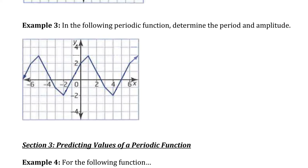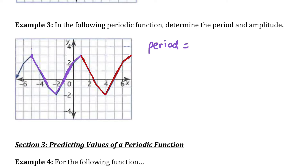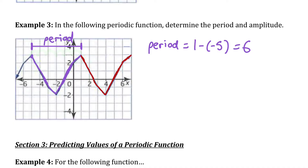Let's do another example. In this periodic function, determine the period and the amplitude. I'll map off one cycle starting at a maximum point — that purple section is one cycle, and the red cycle matches exactly. So this function is periodic. To find the period, the horizontal length of one cycle: it starts at −5 and finishes at 1, so 1 − (−5) = 6. Counting the units confirms the period is 6.